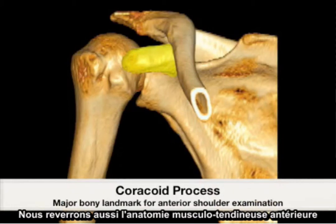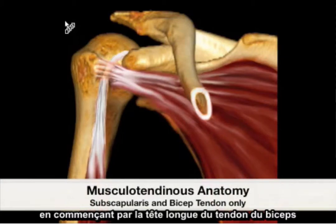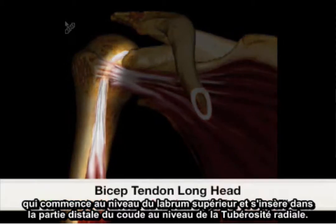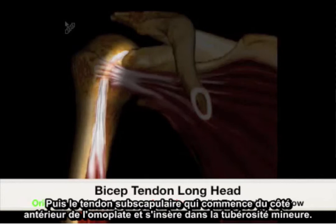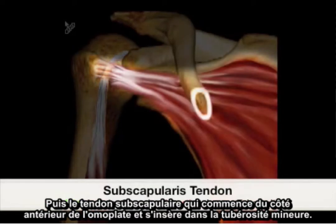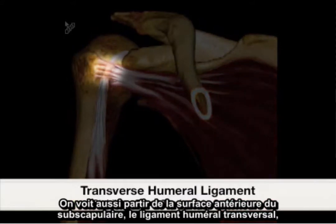We will be reviewing the anterior musculotendinous anatomy, beginning with the biceps tendon longhead, which originates at the superior labrum and inserts at the distal elbow at the radial tuberosity. Next is the subscapularis tendon, which originates at the anterior scapula and inserts to the lesser tuberosity. Also originating from the anterior surface of the subscapularis is the transverse humeral ligament, which anchors the bicep tendon in place over the bicipital groove.